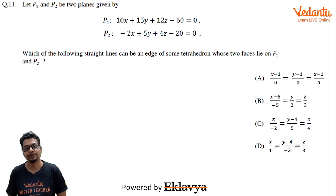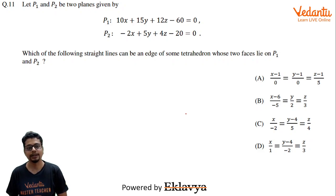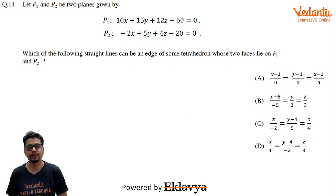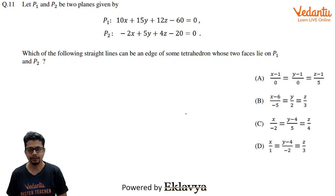Hi everyone, I am Shubham Johar. We are discussing JEE Advanced 2022 Paper 1. The question is: Let P1 and P2 be two planes given by P1: 10x + 15y + 12z - 60 = 0, P2: -2x + 5y + 4z - 20 = 0. Which of the following straight lines can be an edge of some tetrahedron whose two faces lie on P1 and P2?